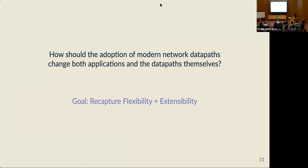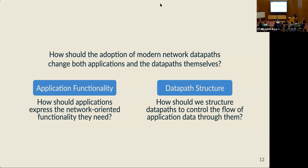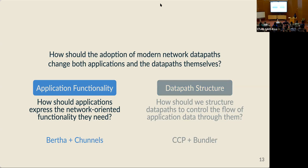This leads us to the main question: how should this shift towards new network data paths and new features change the way we write applications as well as the data paths themselves? Our goal is to recapture the flexibility and extensibility we've enjoyed from layered abstractions over other parts of our infrastructure. I'm going to focus on two specific directions. The first is on the application side: given the modern landscape of communication libraries, how should applications best express the functionality they want from the network? The second is about the data paths themselves: how can we structure these data paths to have the greatest amount of modularity? I'll discuss these through two systems — Bertha and CCP.